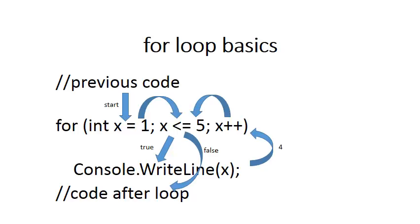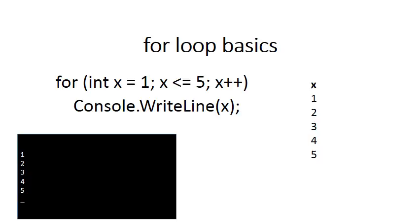To go through the process again: the first thing that happens is X is declared and initialized to 1 as your loop variable. It then jumps to the condition statement and checks whether the condition is still true. If the condition is true, it does the body of the loop. After doing the body of the loop, it goes back to change the value of the loop variable — in this case X++. After changing X, it goes back to the condition. If the condition is still true it repeats the body of the loop; if the condition has become false, it jumps to the code after the loop and the loop is terminated.